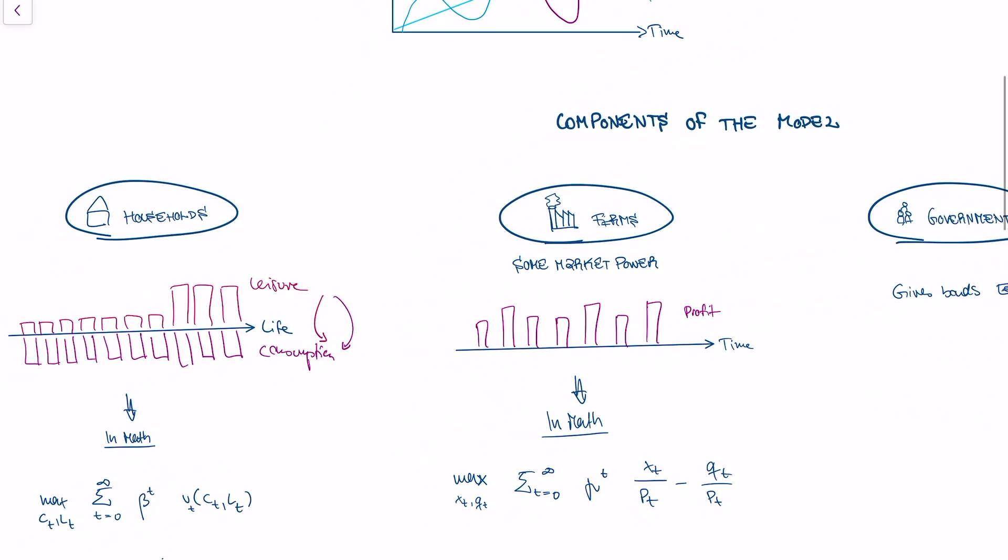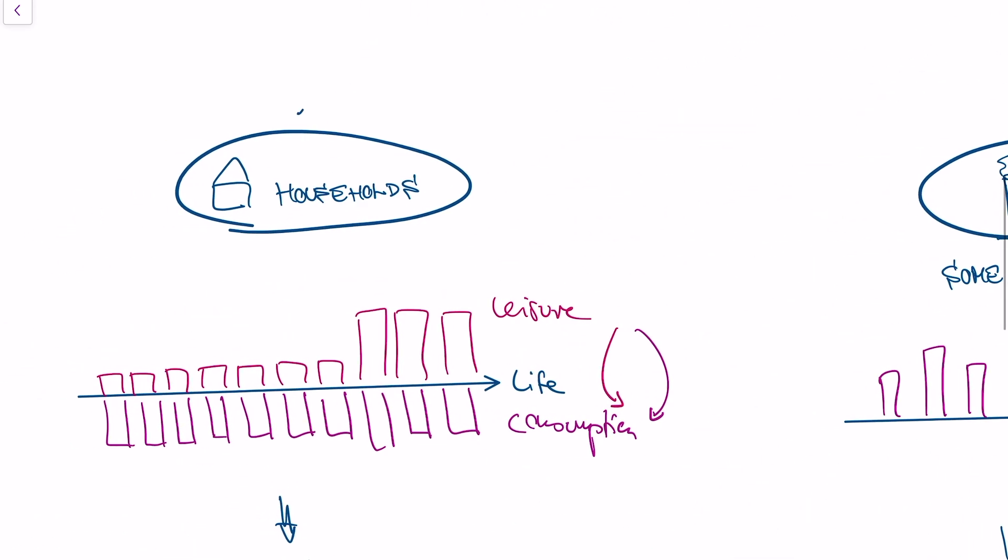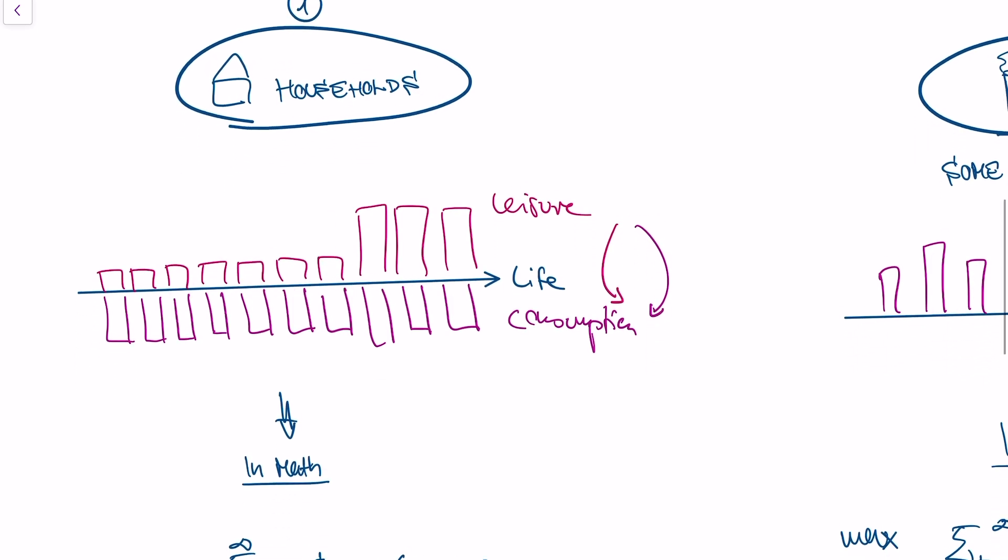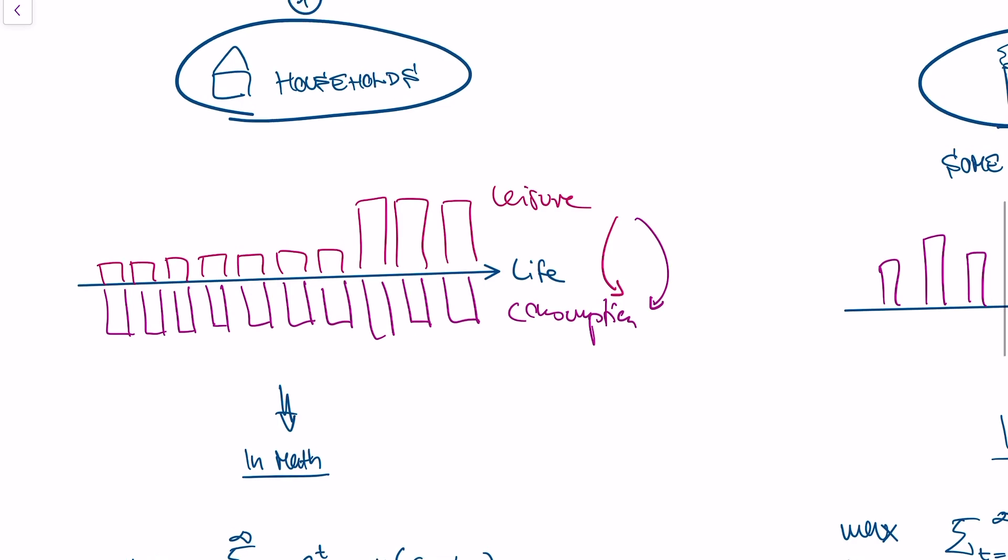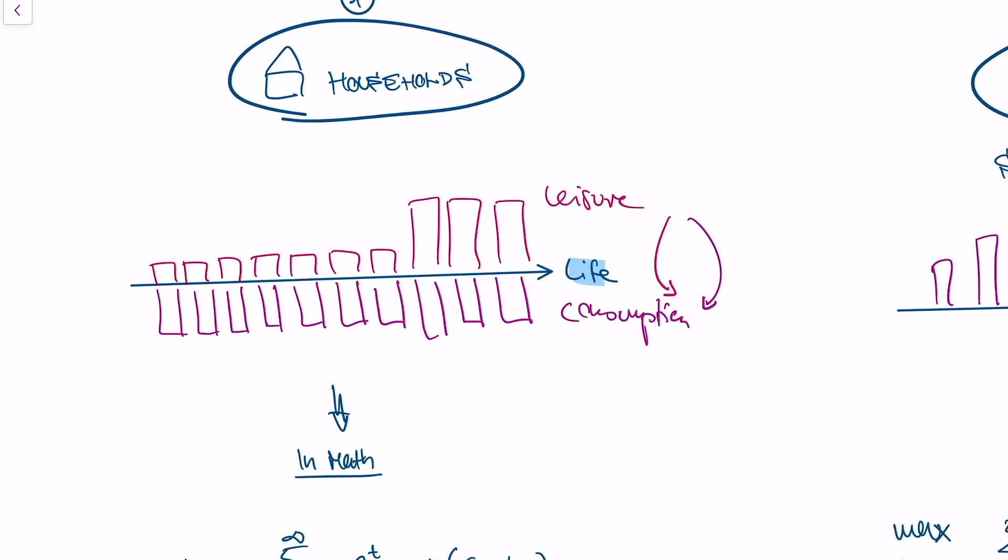The first agent in the economy that we look at is the representative household. That's you and me. In the model, the household makes one big decision. Every person likes leisure and every person likes consumption, and they try to have as much leisure and as much consumption as they can over their lifetime. What I've done here is I've plotted a usual leisure and consumption diagram. People enter the workforce or study in their early years, so they have not a lot of free time, and then they enter retirement and have a lot of free time.